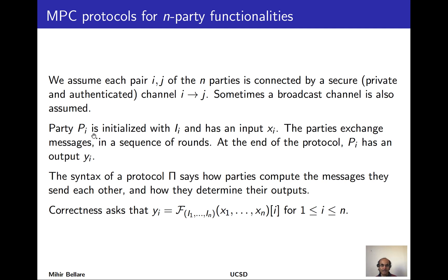Party P_i is initialized with its long-term input and then brings into the protocol its actual input x_i. At this point the parties can start interacting. The protocol consists of a sequence of rounds; in each round all parties send messages to all other parties — at the beginning of the round they all send, and at the end they receive. At the end of the protocol, each party will have a local private output which we call y_i.